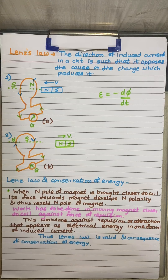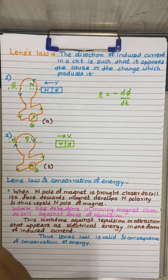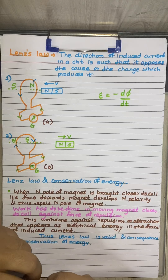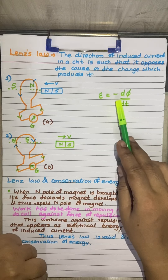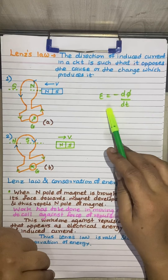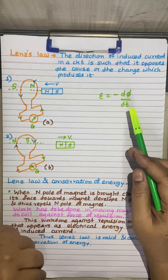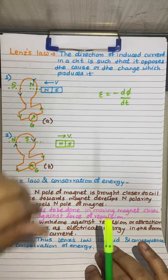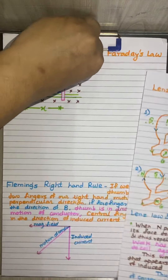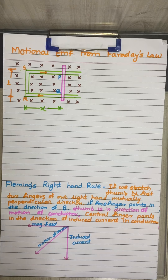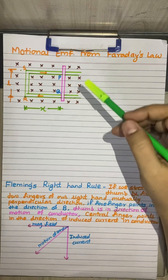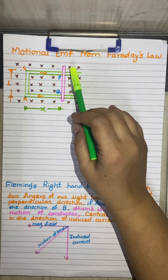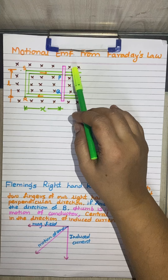Now we are going to understand another topic. We have studied Faraday's laws and how Lenz law explains the direction of the induced current inside the coil. Now we are moving towards another topic called Motional EMF from Faraday's law — what is meant by Motional EMF and how to calculate it. This question is asked for three marks, and Motional EMF is also derived from the Lorentz force.